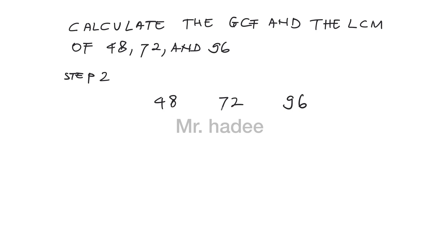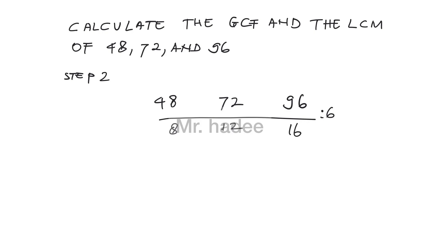48, 72, and 96 can be divided by 6. 48 divided by 6 equals 8. 72 divided by 6 is 12. 96 divided by 6 equals 16. Since 6 can divide 48, 72, and 96, circle this number.